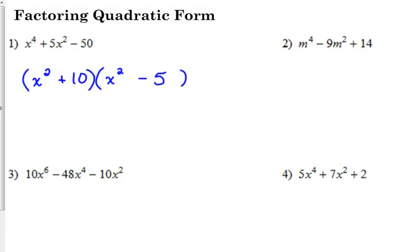Let's look at number two. m to the fourth minus 9m squared plus 14. m squared times m squared is going to give us m to the fourth. Factors of 14, both of them are negative, that add to give us negative 9. That would be negative 7 and negative 2.